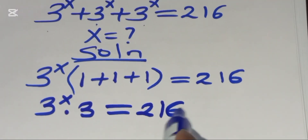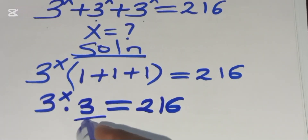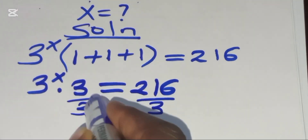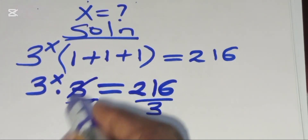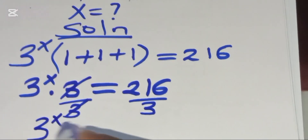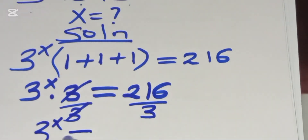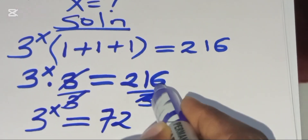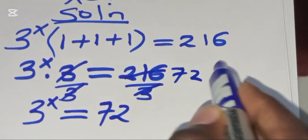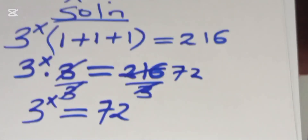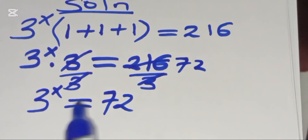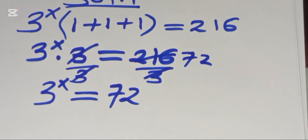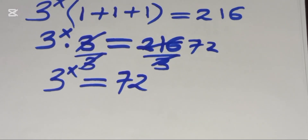Now from what we have here, you divide both sides by 3, so that we have 3 raised to the power x equals 72. If you divide 216 by 3, this gives 72.